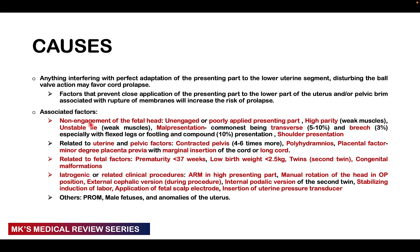Predisposing factors include an unengaged or poorly applied presenting part, high parity with weak muscles, unstable lie, and malpresentations. It is very common with transverse presentation in about 5 to 10%, with breech presentation in 3% — especially with flexed leg or footling breech, or compound breech in about 10% of cases. It is also very common in shoulder presentation.